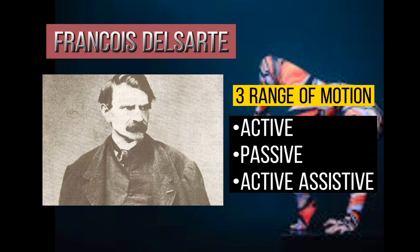The three ranges of motion: active, passive, and active-assistive. When we say active, it is movement without others' help. Passive means equipment will move you. Active-assistive means with the help of others to move the facilities.